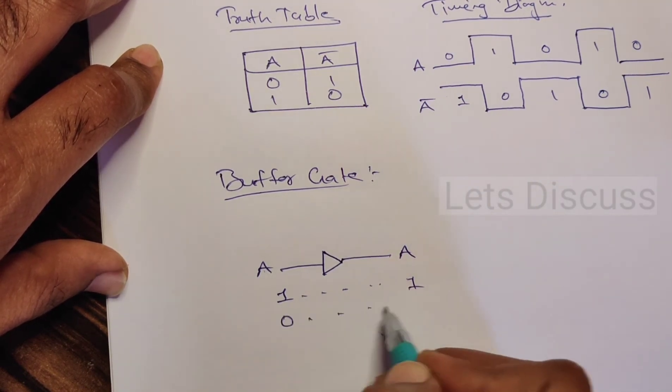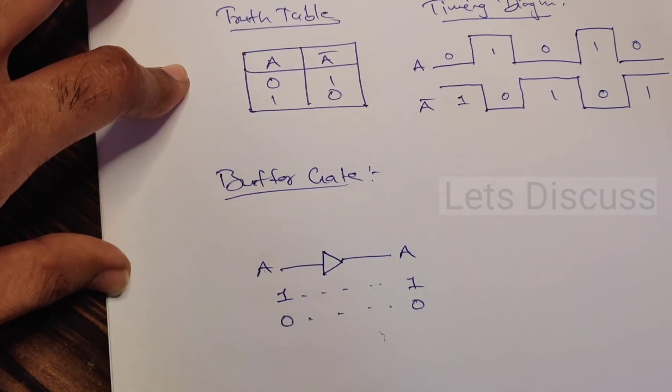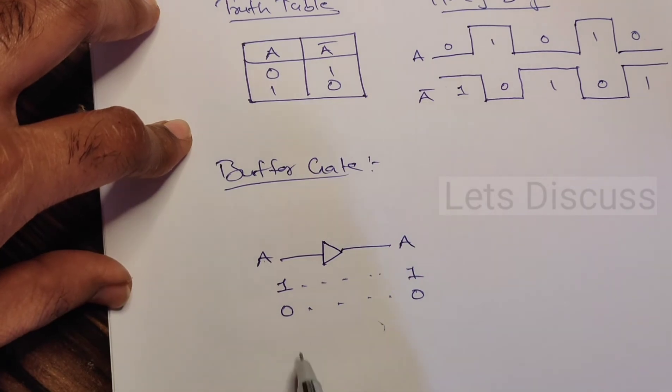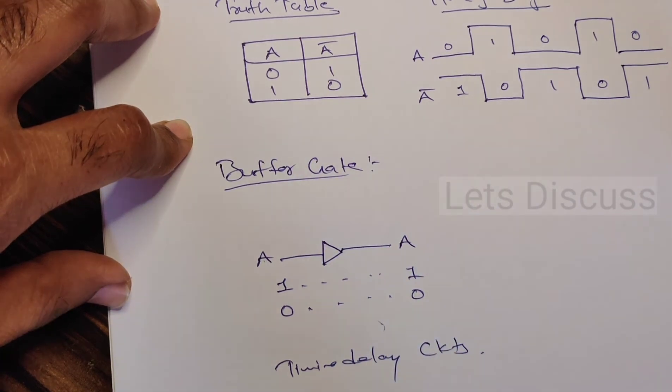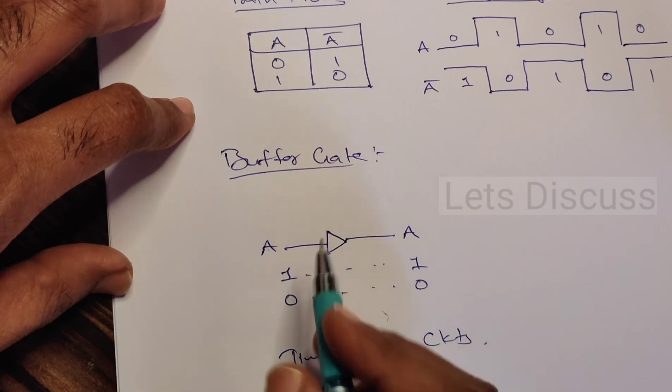Now what is the use of the buffer gate? Okay, it is used in time delay circuits. Wherever we need some time delay, we use this buffer gate.